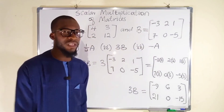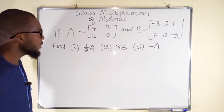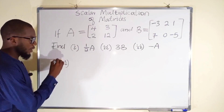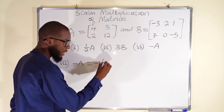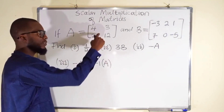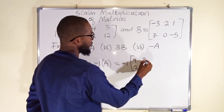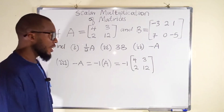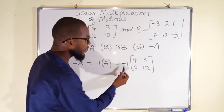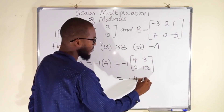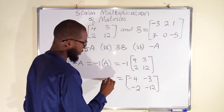Now let us take the last one, which is negative A. Negative A is the same thing as multiplying matrix A by negative 1. So for number 3, negative A equals negative 1 multiplied by A. Matrix A is [4, 2, 3, 12], so this becomes negative 1 multiplied by each of those entries. Every single element in this matrix will be affected by negative 1. Negative 1 times 4 is negative 4; negative 1 times 2 is negative 2; negative 1 times 3 is negative 3; and negative 1 times 12 is negative 12. So this is our new matrix, which is negative A: [−4, −2, −3, −12].